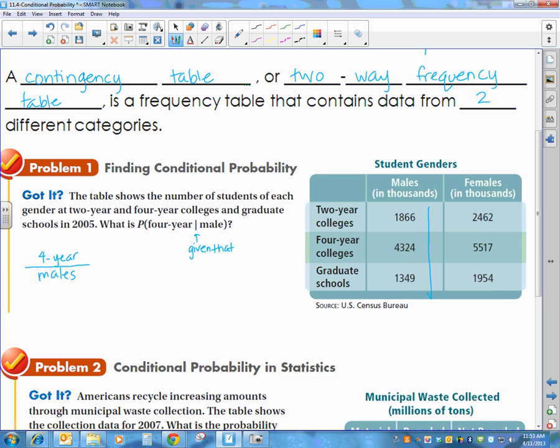But I want to know how many of those are four-year students. So we do need to add up all of our male students. And we get 7539. And that would be our total males. And how many of them are four-year college graduates?